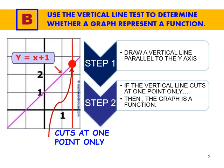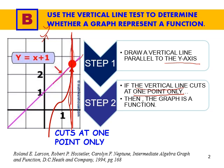Step one: draw a vertical line parallel to the y-axis. If the vertical line cuts or intersects at one point only — as you can see here, the line intersects the graph at just one point — then the graph is a function. This is the conclusion that we need to write.